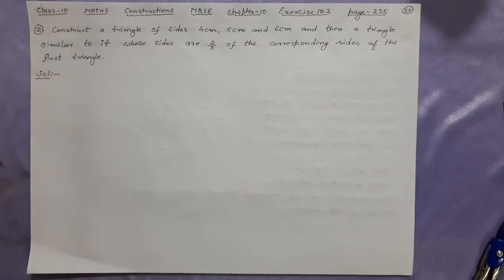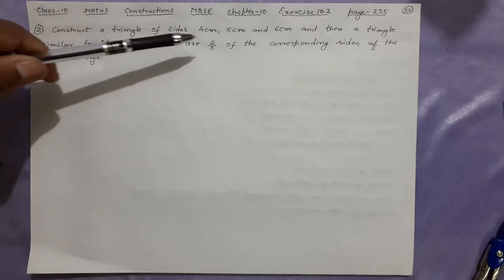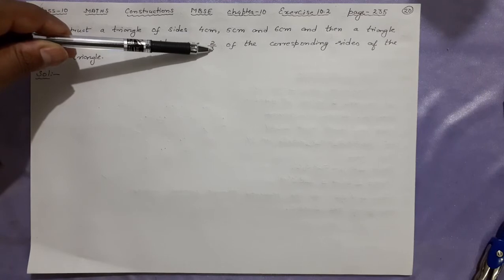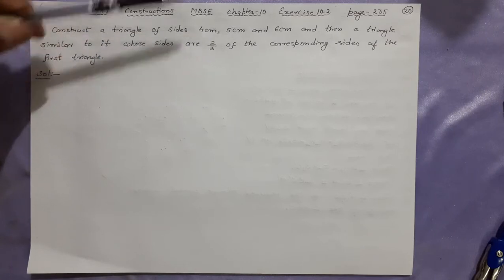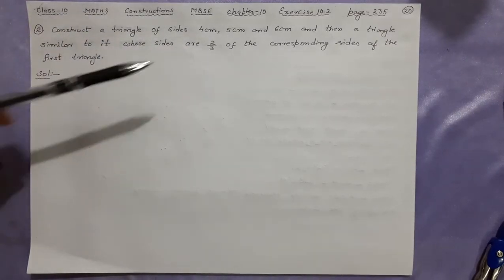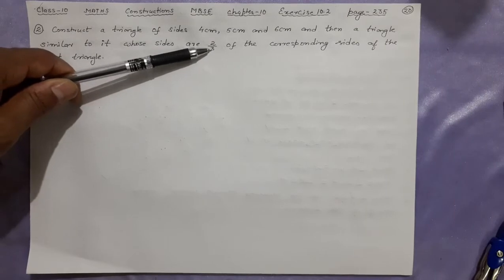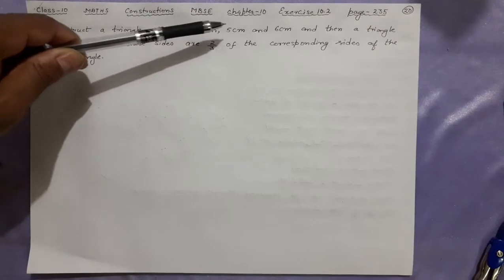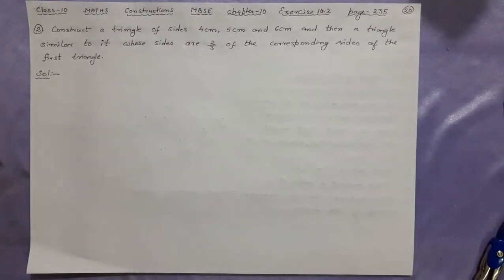It is similar to your question number 1 where the numbers have changed now. Earlier the number was 3/4. Remember the numerator is smaller, denominator is bigger. That means the way of doing is exactly the same. The original triangle will be bigger, the new triangle formed will be smaller. Let us do this question.